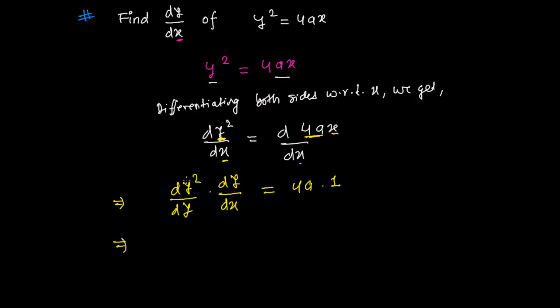So now what we get? Now dy squared over dy, so we can use the power rule and that will be 2y times dy over dx equals to 4a. If you want then you can cut here also. It is 2 times 2. 2 times 1 equals 2 and 2 times 2 equals 4, right?